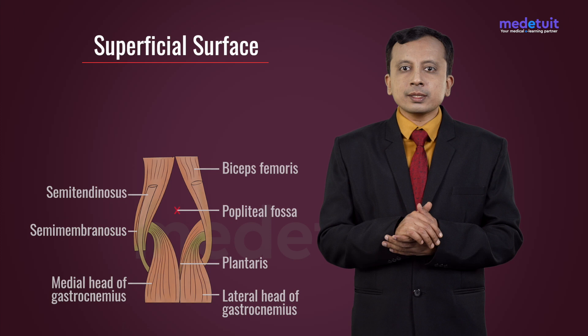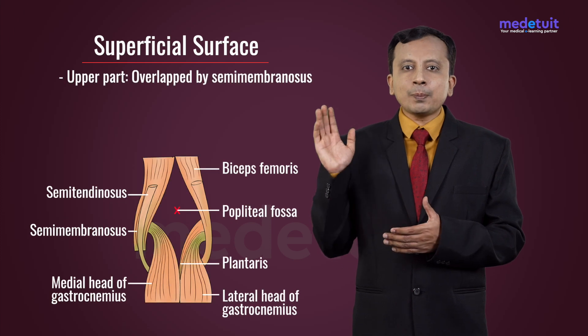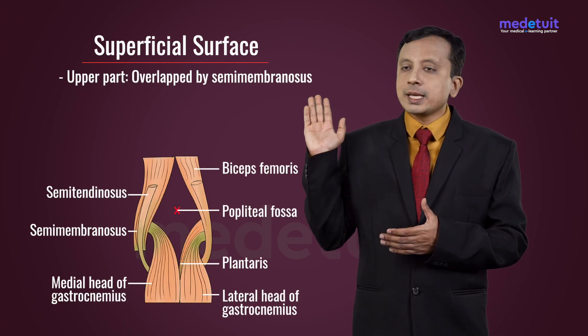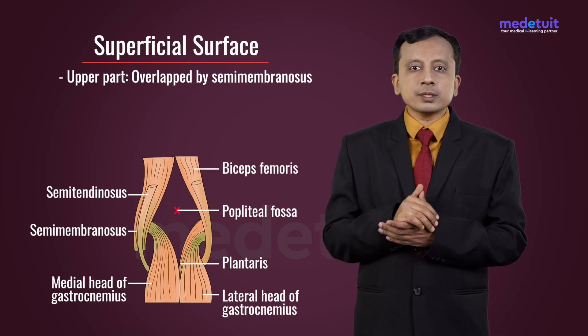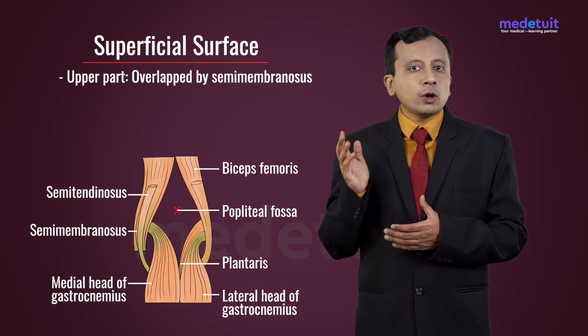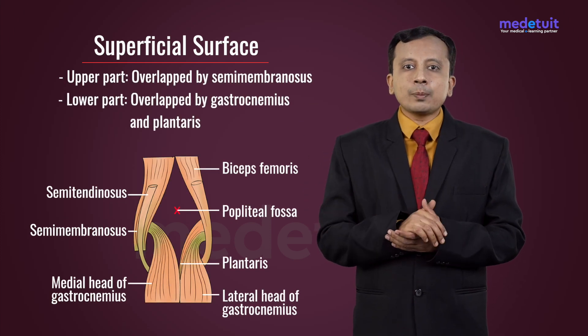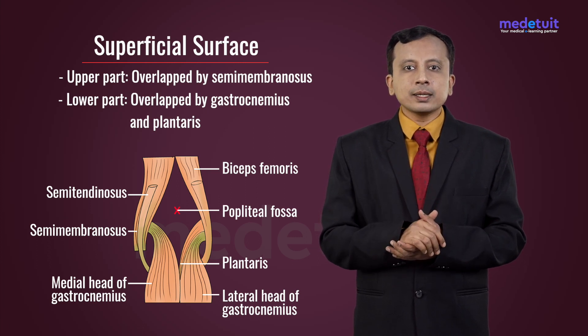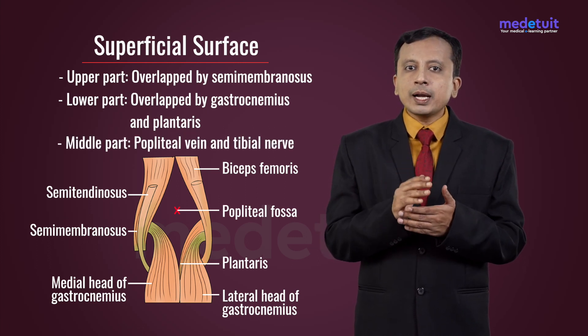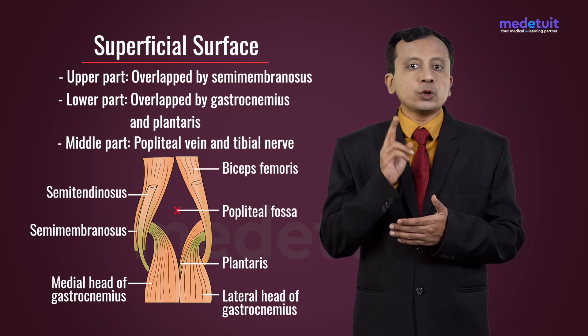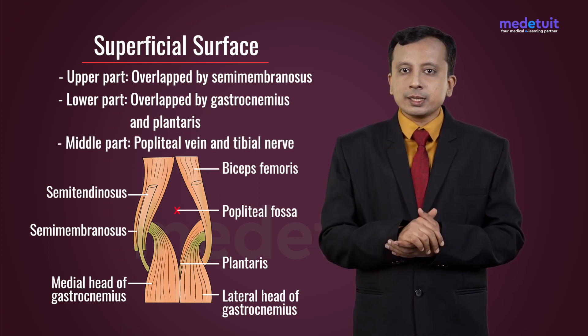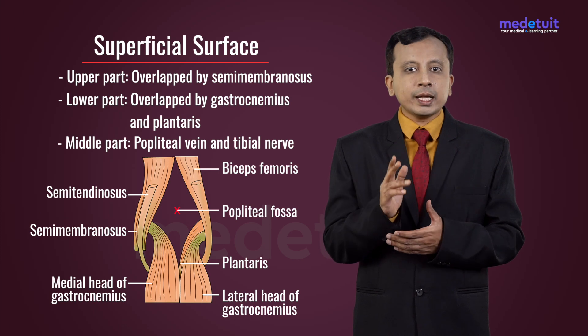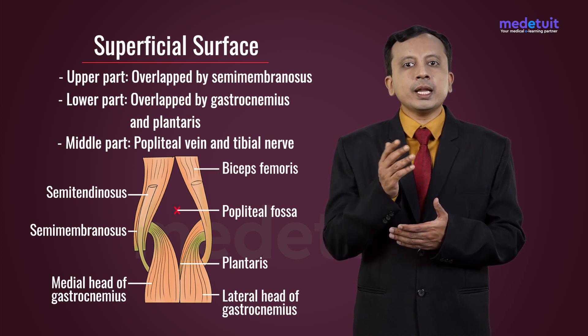On the superficial surface: in the upper part, it is overlapped by semimembranosus; in the lower part, it is overlapped by gastrocnemius and plantaris; and in the middle part, it is crossed by two important structures — the popliteal vein and the tibial nerve.